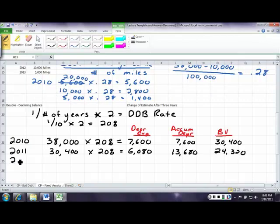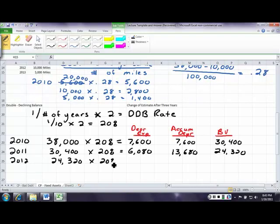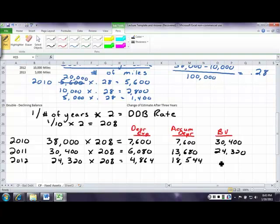In 2012, $24,320 times 20% equals $4,864, which gives you $18,544, and a book value of $19,456.